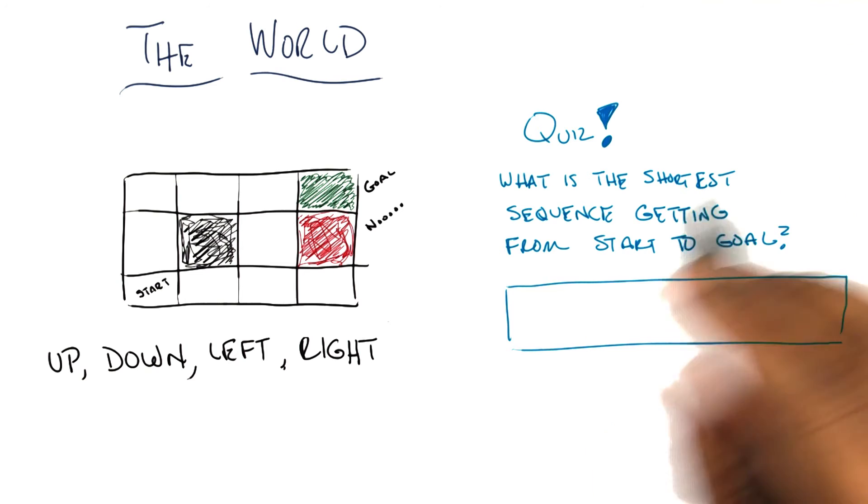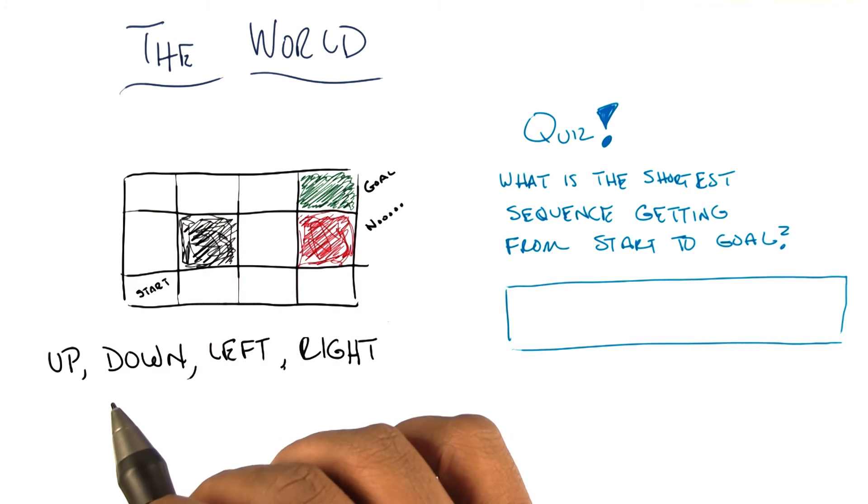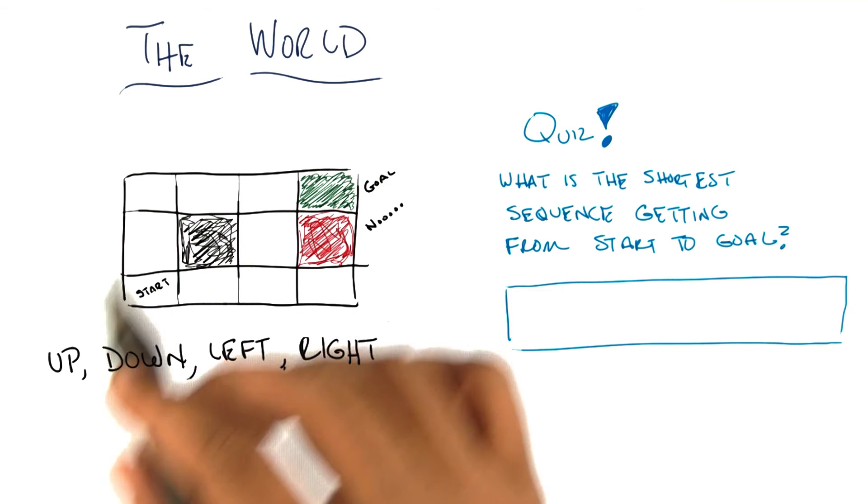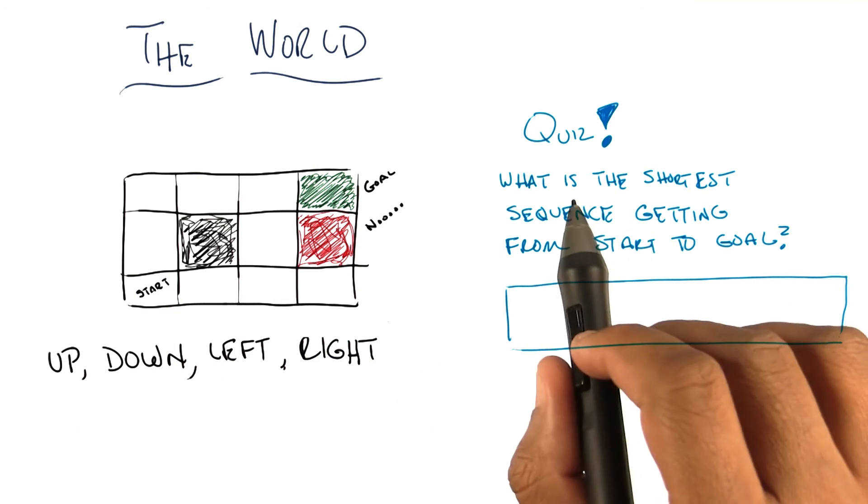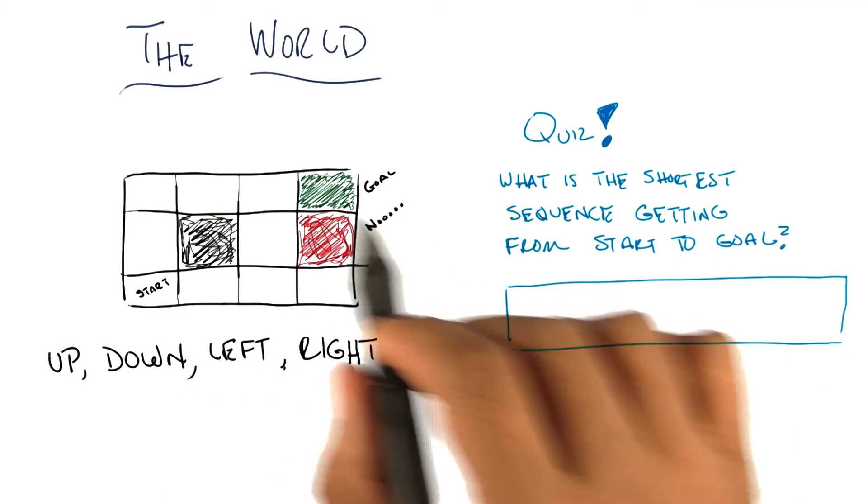Excellent. So, here's the quiz. Given this particular world, with the physics I just described to you, and given these actions that you can take, up, down, left, and right, what is the shortest sequence of actions that would get us from the start state to the goal state?